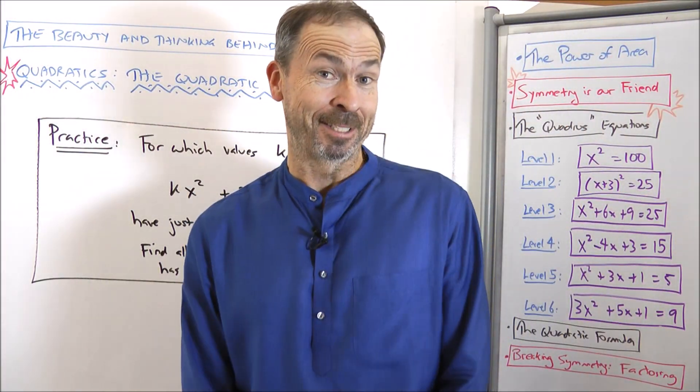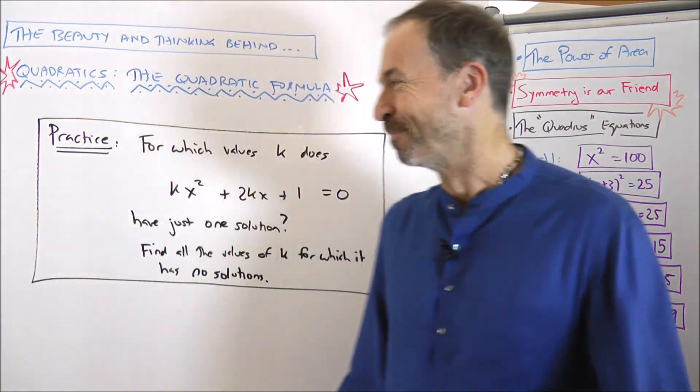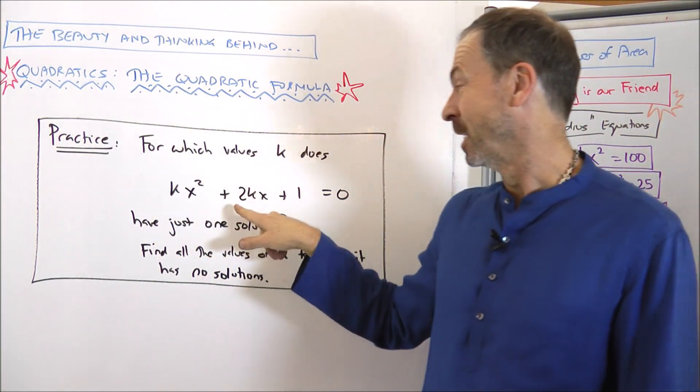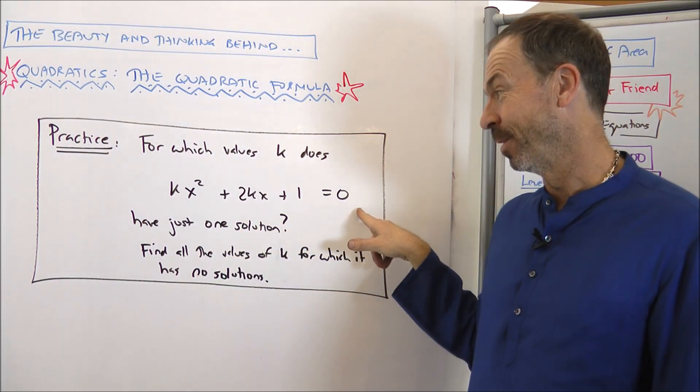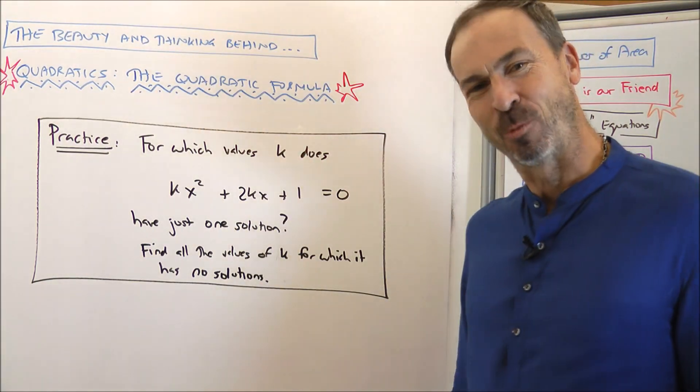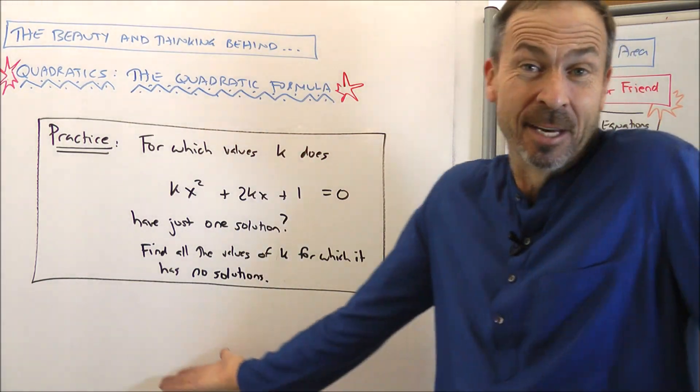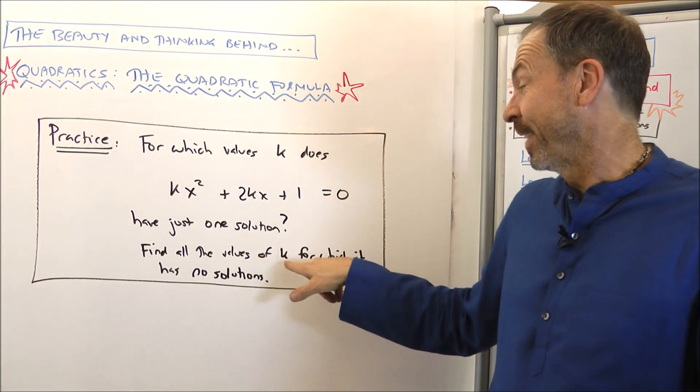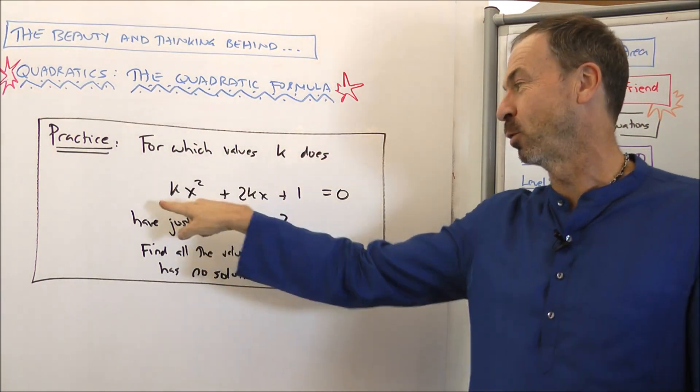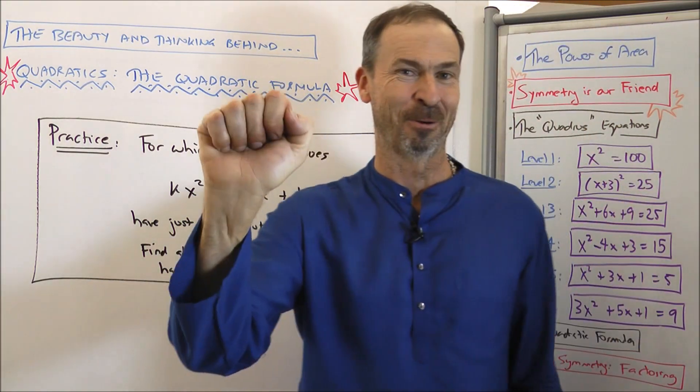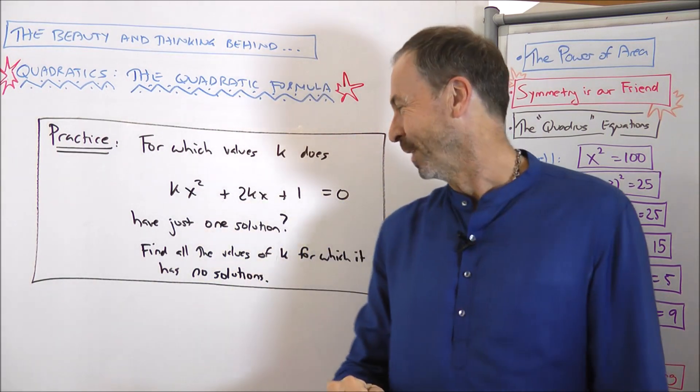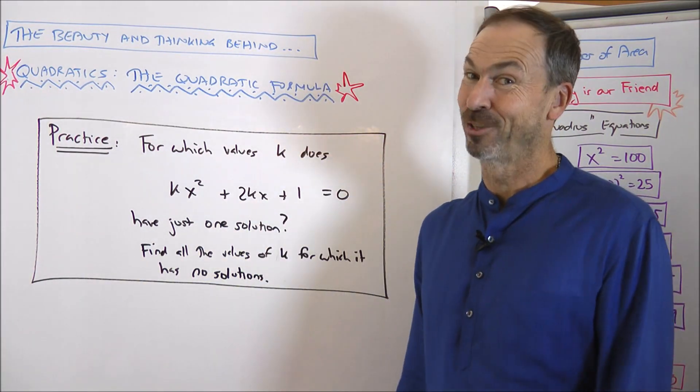Okay, while we're practicing this, let's have another strange-looking question. For which values of k does kx squared plus 2kx plus 1 equals 0 have just one solution? What values of k make this have just one solution? And while we're at it, let's practice this some more. For which values of k do we have just zero solutions? Find all the values of k for which this equation has zero solutions. So, all the k's for just one solution, and then all the k's for zero solutions. Give it a try.